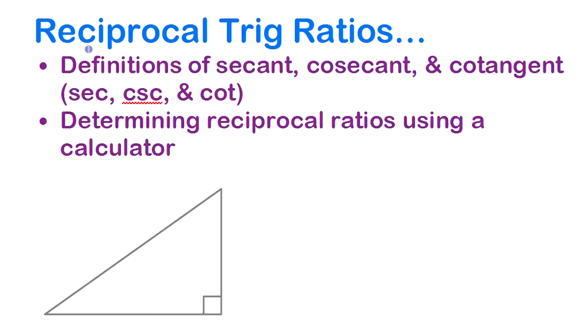We're going to look at reciprocal trig ratios. Reciprocal trig ratios are three other ratios — there are actually six trig ratios in total, and if you think about a right triangle, it sort of makes sense.